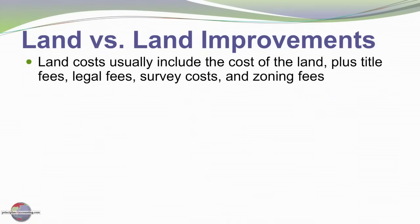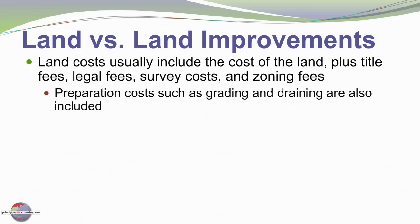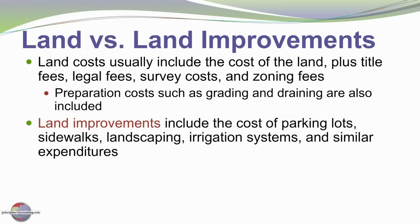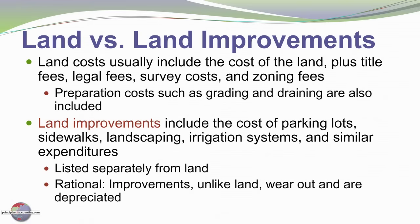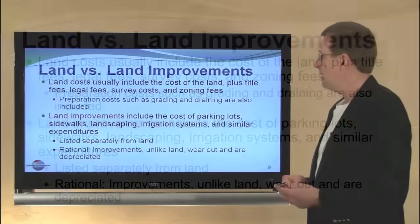Let's look at land and land improvements. Land costs usually include the cost of the land plus title fees, legal fees, survey costs, zoning fees, and preparation costs such as grading and draining. There are also costs that are not land but land improvements — including parking lots, sidewalks, landscaping, irrigation systems, and similar expenditures. Those are typically capitalized as a separate asset because, unlike land, improvements wear out and would be depreciated. You would eventually need to replace a sprinkler system or landscaping, for example.